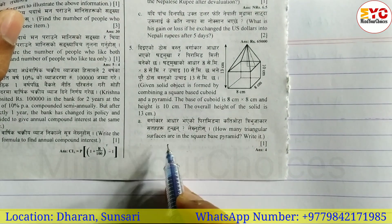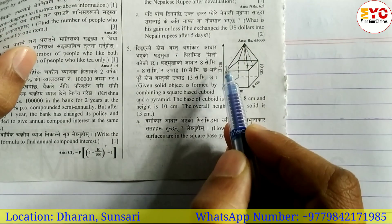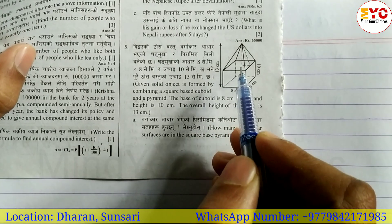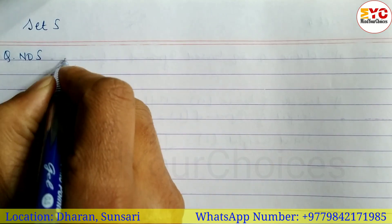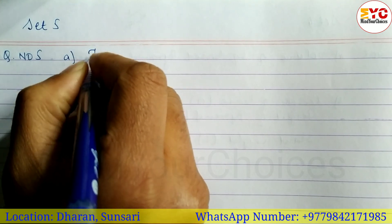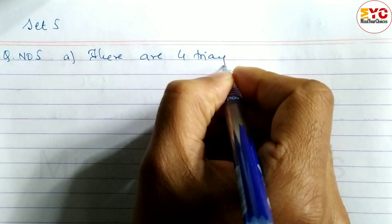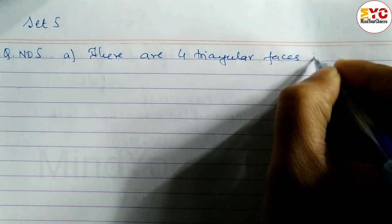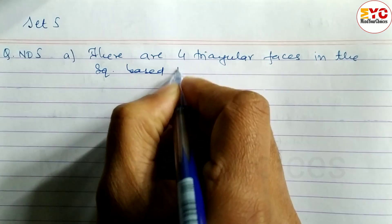Question A: How many triangular faces are there in a square-based pyramid? Now, in a pyramid you have triangular faces on the front, back, left side, and right side — that gives four faces. So the answer is: there are four triangular faces in the square-based pyramid.